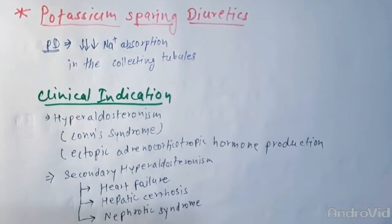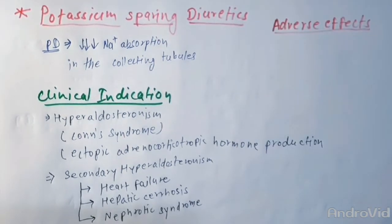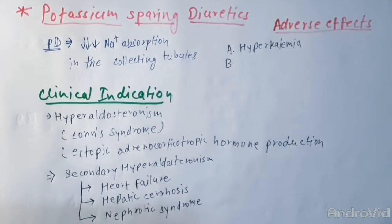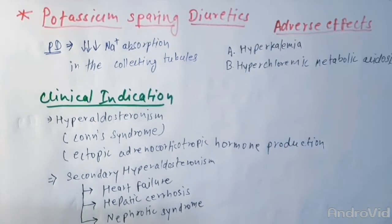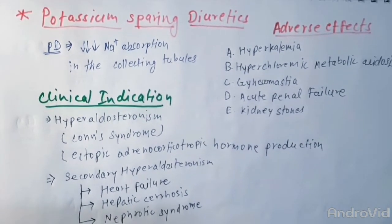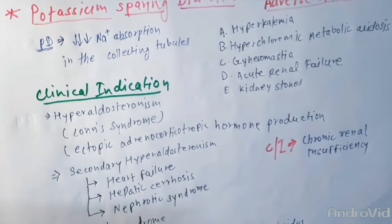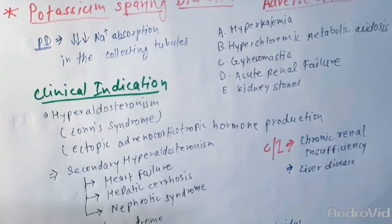Amiloride has shown its benefit in this condition. Amiloride is also used in the condition of nephrogenic diabetes insipidus. Their adverse effects include hyperkalemia, hyperchloremic metabolic acidosis, gynecomastia, acute renal failure, and kidney stones have also been reported. They are contraindicated in chronic renal insufficiency and in patients with liver disease.